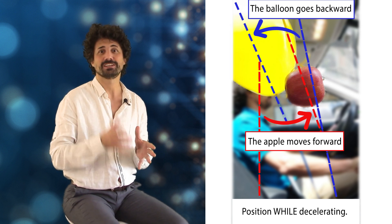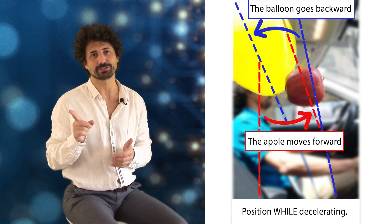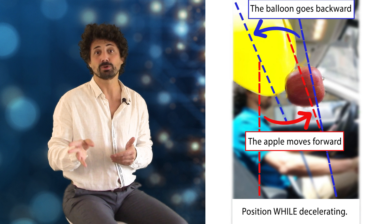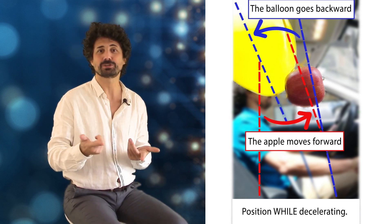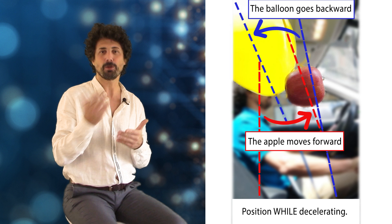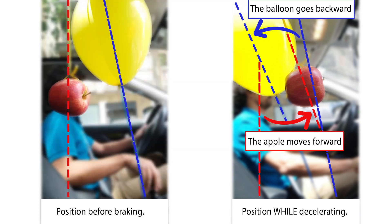The car brakes, that is, it undergoes a backward acceleration relative to the road. So, from the point of view of the observer inside the car, all objects undergo a forward acceleration opposite to the car. So, when I brake, the apple is accelerated forward from the point of view of the person inside the car. Good, and now we are left with a crucial question.